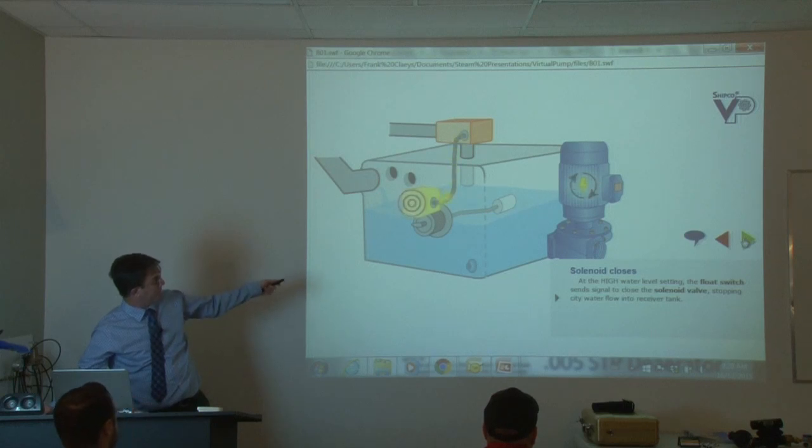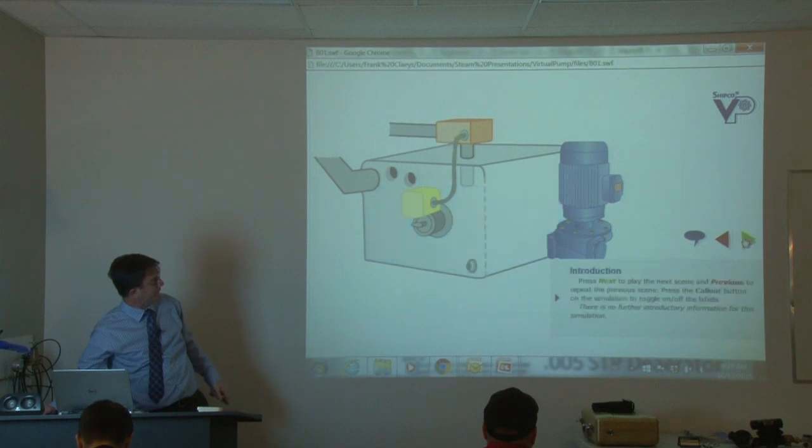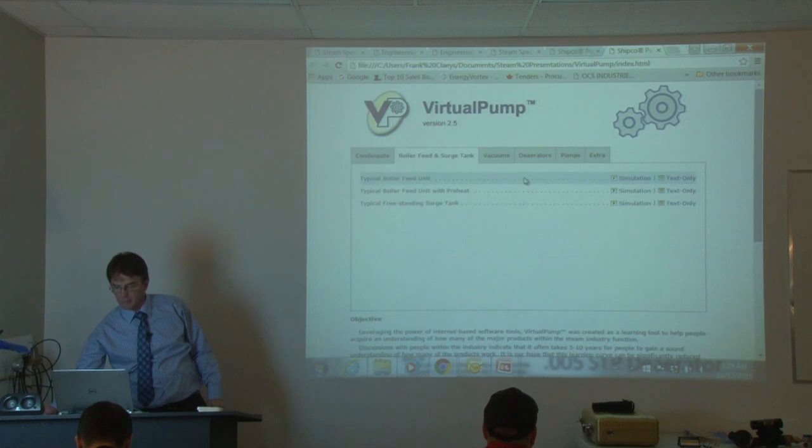When a float rises up to its highest point, the contact is open. It tells the solenoid to stop and it just continues on that way. So that's a very simple boiler feed pump.